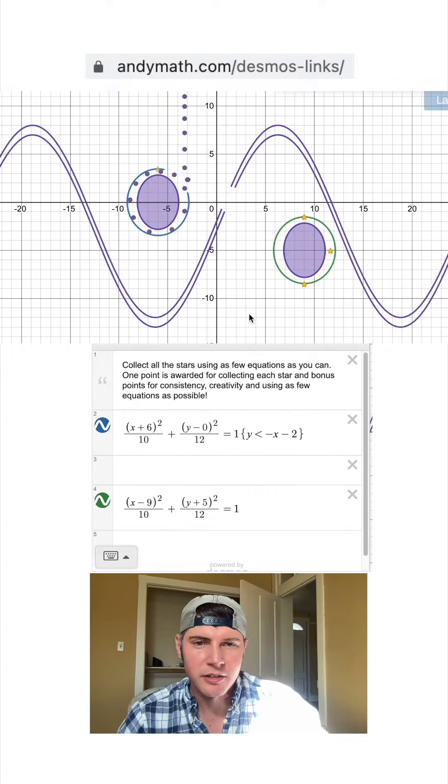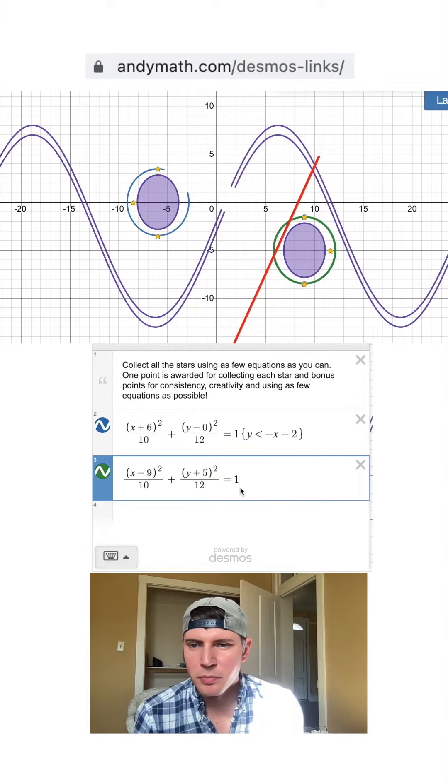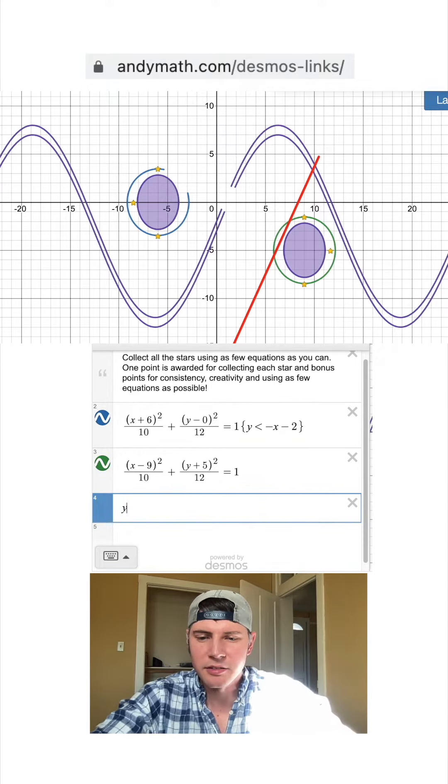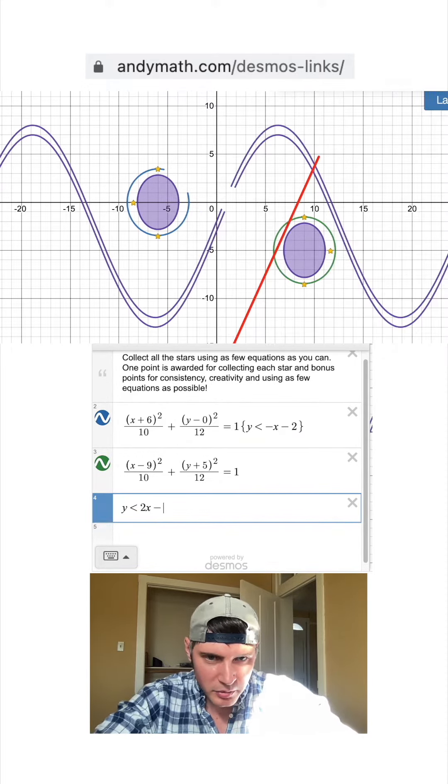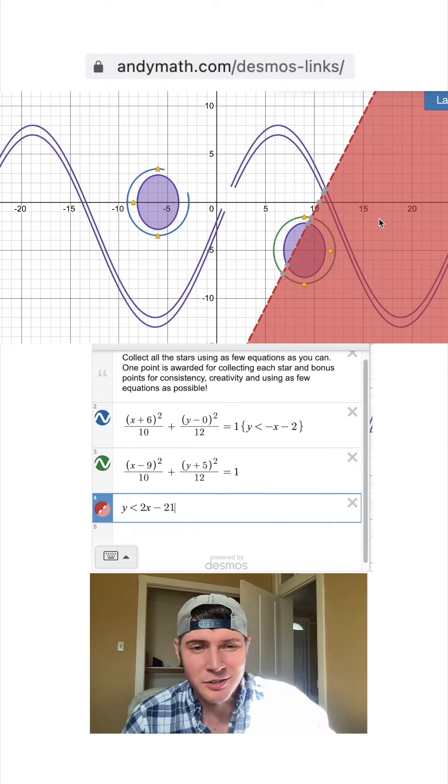Cool, now we just need to work on this other ellipse. I'm going to cut this other ellipse like right there. So it looks like a steeper slope—we'll say y is less than 2x—and then we want to drop that down quite a bit. That might work right there. Once again, everywhere that's red will stick around.